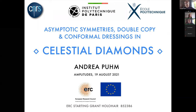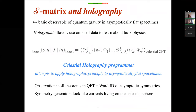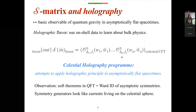Thank you for the introduction and thanks to the organizers for the opportunity to speak at this conference. The S-matrix is our basic observable for quantum gravity in asymptotically flat spacetimes. Since we can use null data to learn about physics, it has a holographic flavor, which becomes particularly crisp when we replace momentum by boost eigenstates, so the S-matrix takes the form of a celestial correlator — a conformal correlator of operators living at the boundary of spacetime. This equality is at the heart of the celestial holography program, which attempts to apply the holographic principle to asymptotically flat spacetimes.